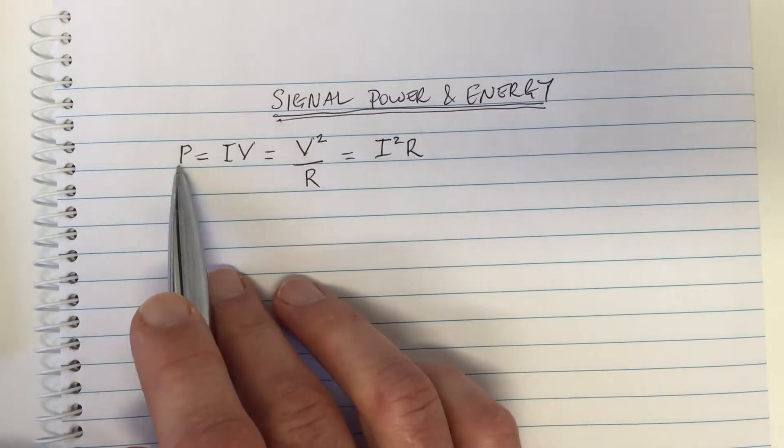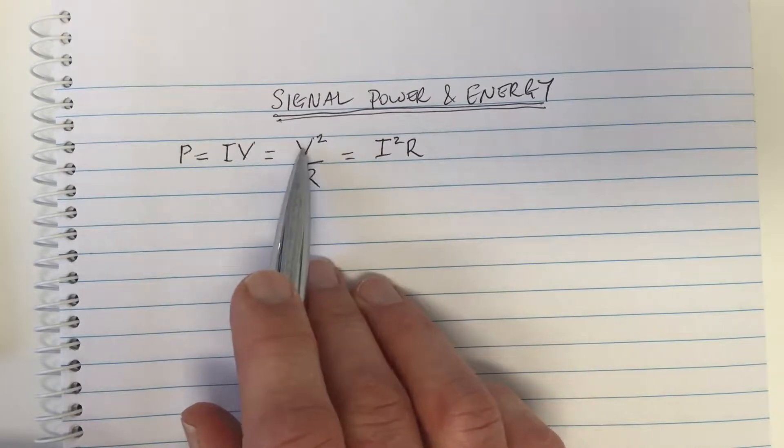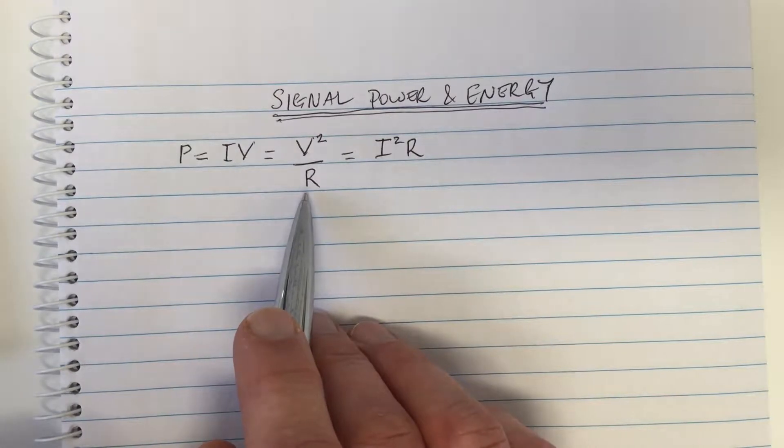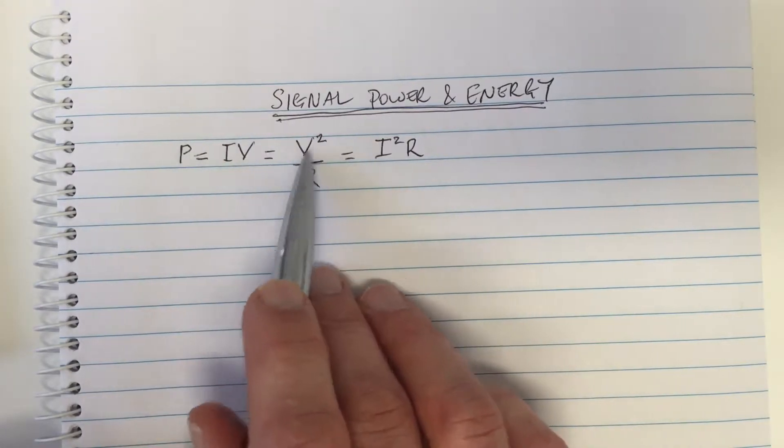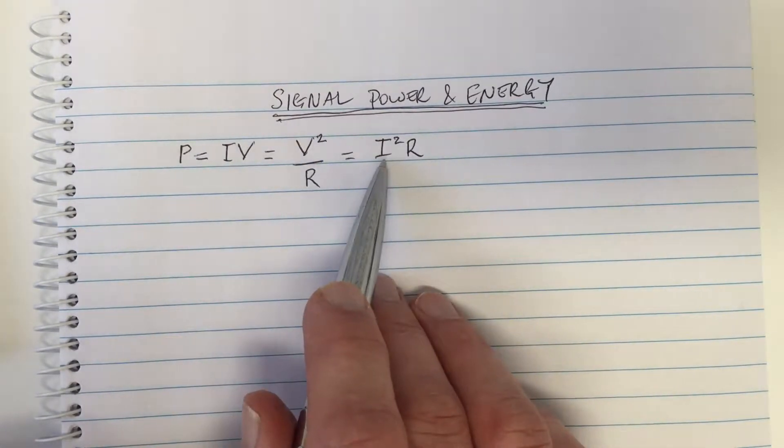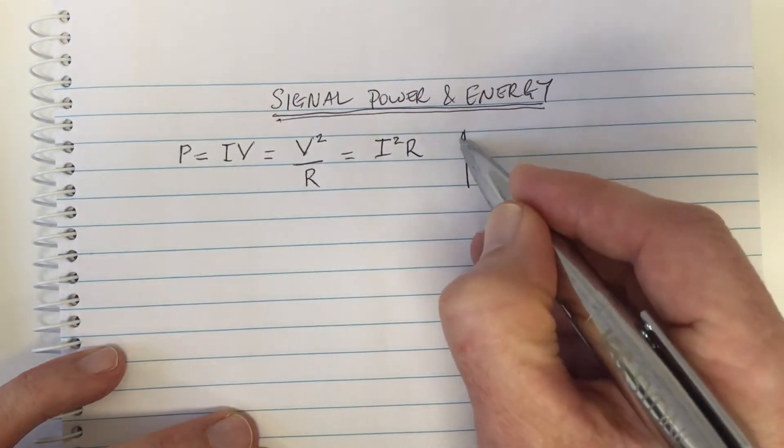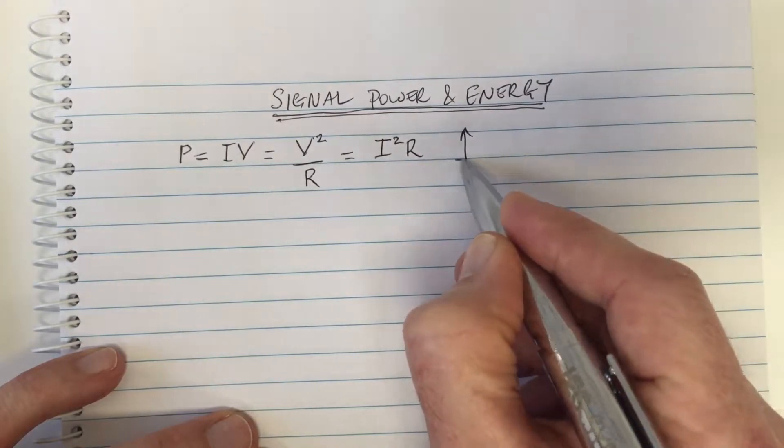So the power is the square of the voltage. If it was a unit resistor, a one ohm resistor, the power would be the square of the voltage. It would also be the square of the current. And let's think about that in signal terms - that's one example where the power is the square.